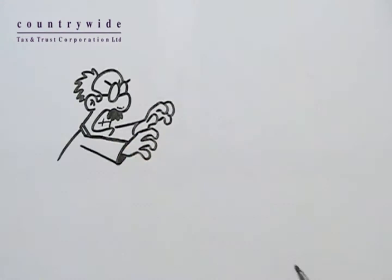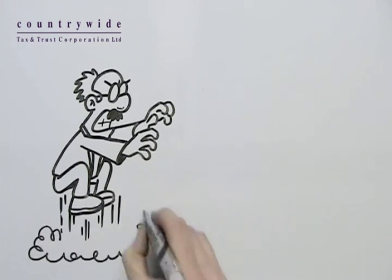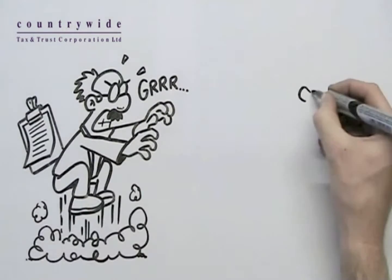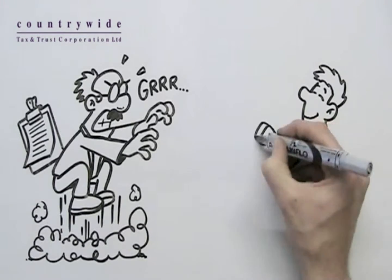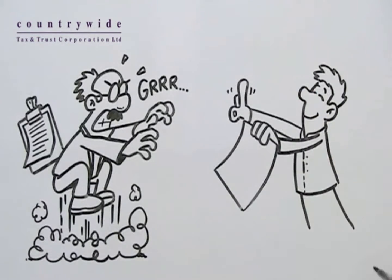Simply by changing the ownership of your property to tenants in common and setting up a simple trust, you can protect your home from the money-grabbing local authority and make sure your children and future generations benefit.